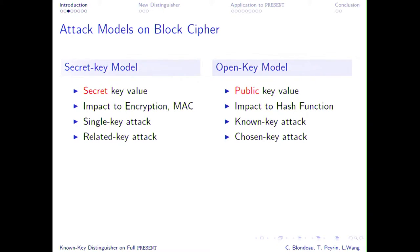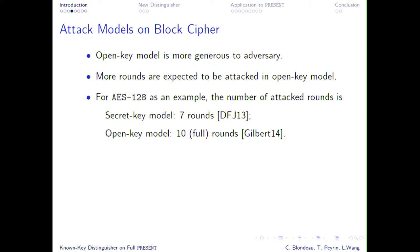We can have known key and chosen key attacks. Because the open key model is much more generous to the attacker, we should expect to be able to attack more rounds if we know the key. For instance, on AES, if we don't know the key in the most classical model, we can only attack seven rounds of AES-128. But if we know the key, then we can have a distinguisher on the full cipher.